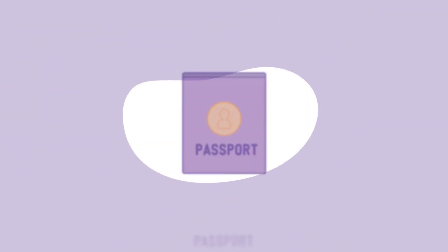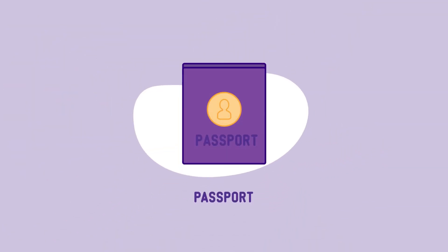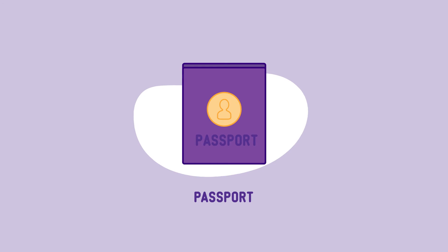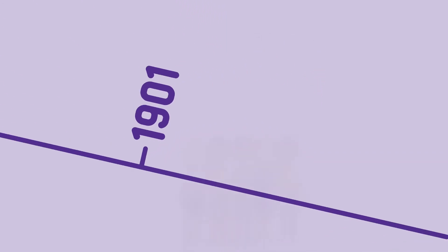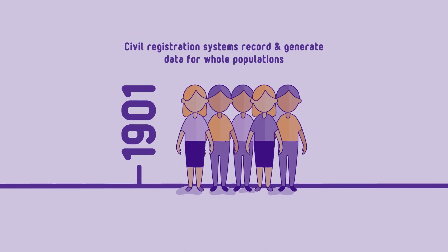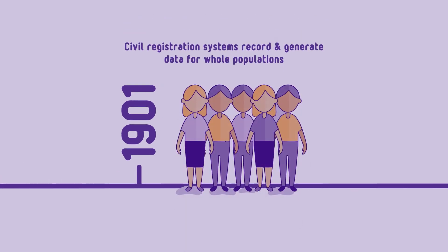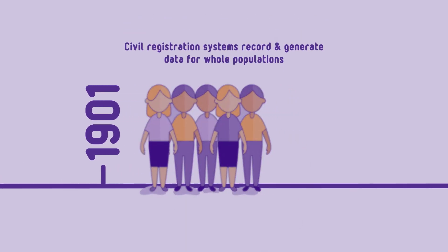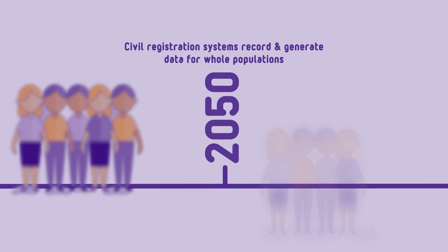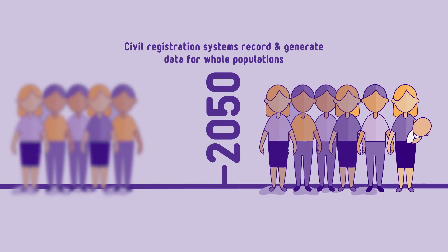It also offers the basis for identity documents such as a passport or ID card. Civil registration systems should be permanent, compulsory, universal and continuous, so that they can generate records for the whole population on an ongoing basis.